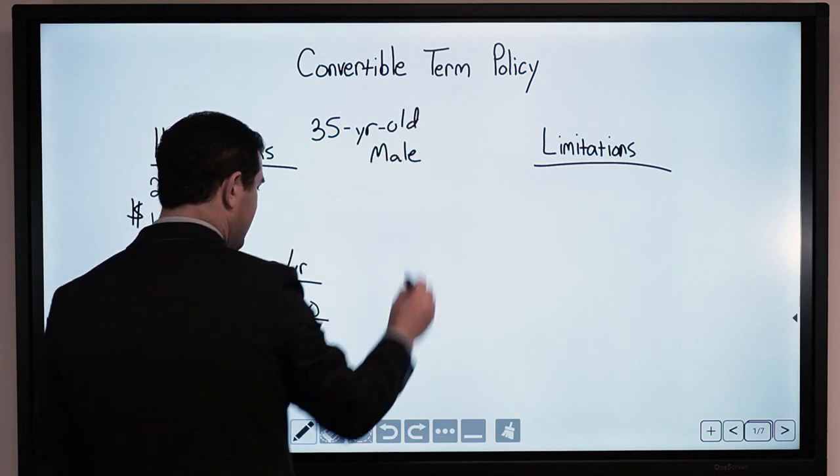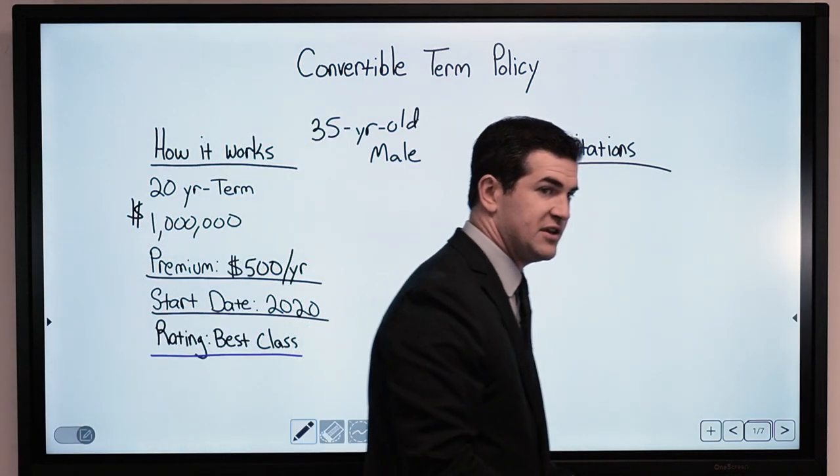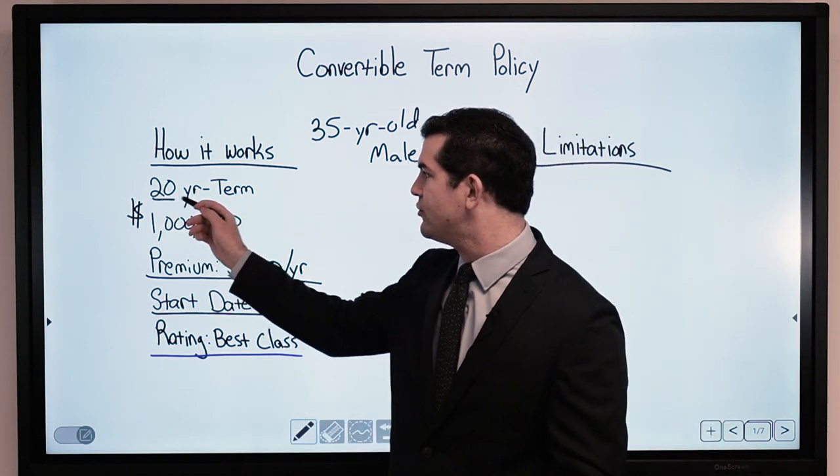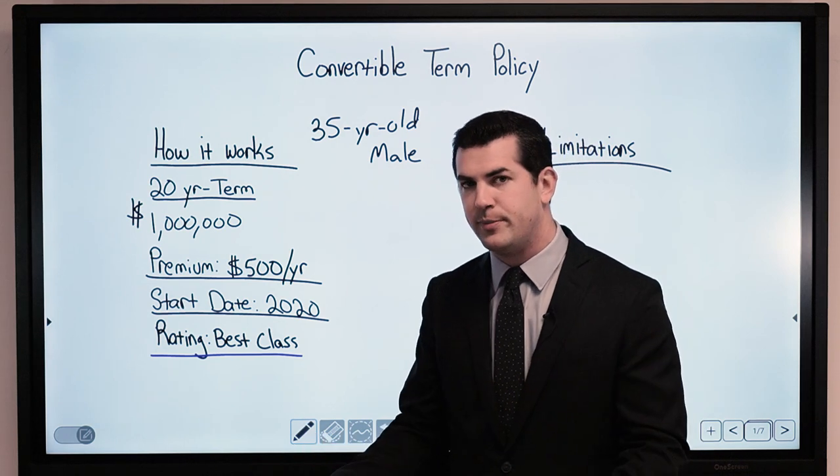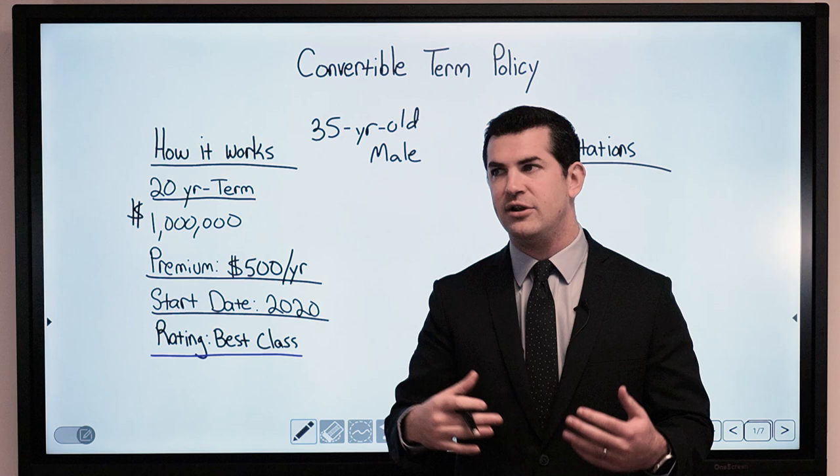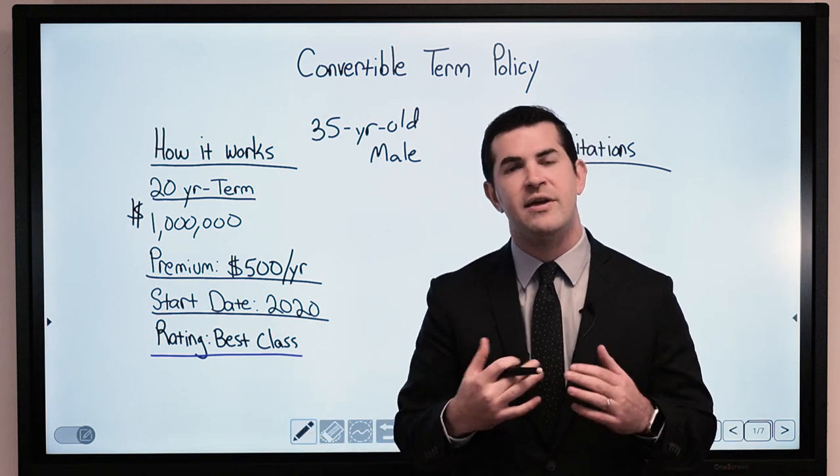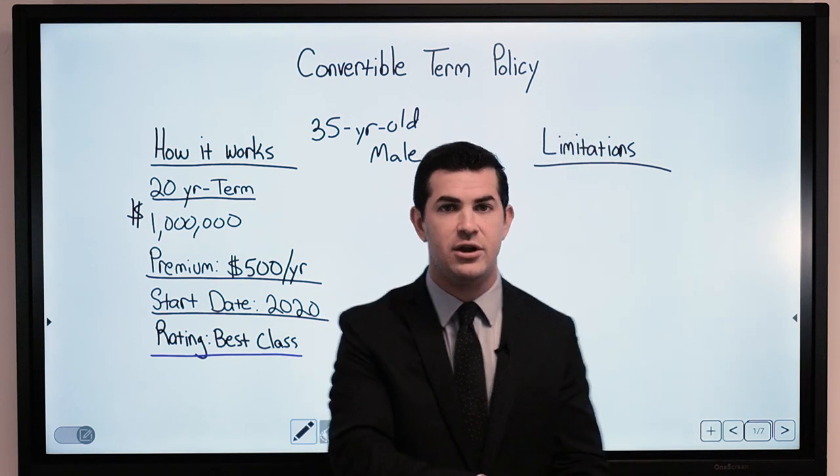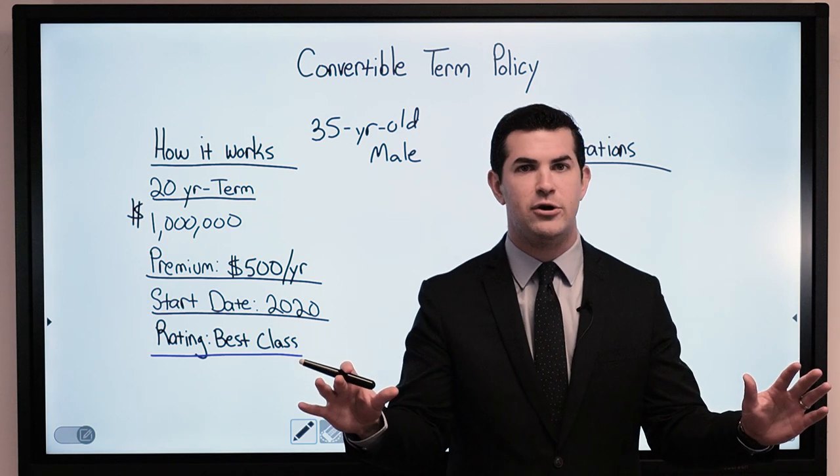Now how a convertible term insurance policy works is if I purchase a $1 million death benefit, we'll assume that it is 20 years, that policy is convertible for the 20-year period. Some policies require that we add a rider, often termed as an extended term conversion rider, or a different name that locks in the ability to convert that term policy to whole life insurance for the entire 20-year period.